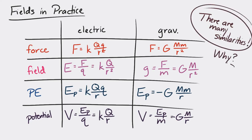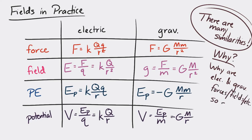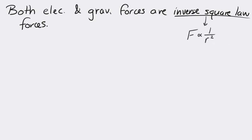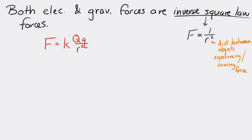Why are electric and gravitational forces, fields, potential, and potential energy so similar? These are both a type of force known as inverse square law forces, which are pretty common in physics. Inverse square law forces are forces where the force is proportional to 1 over r squared. For example, the electric force is F = kqq/r² and the gravitational force is F = Gmm/r² — they both have r squared in the denominator.